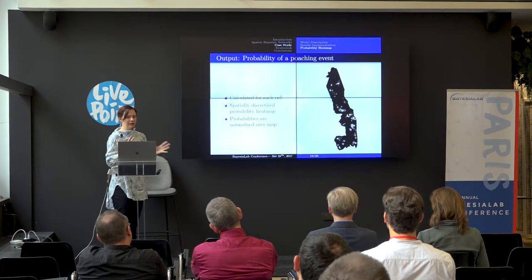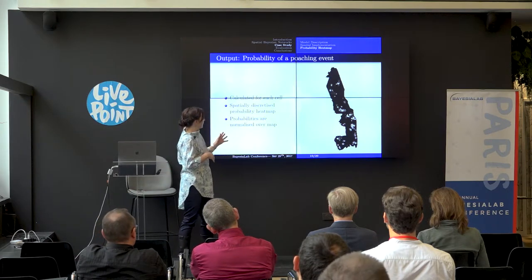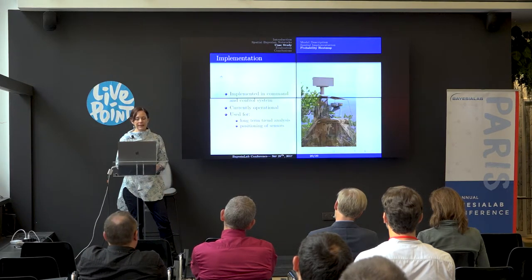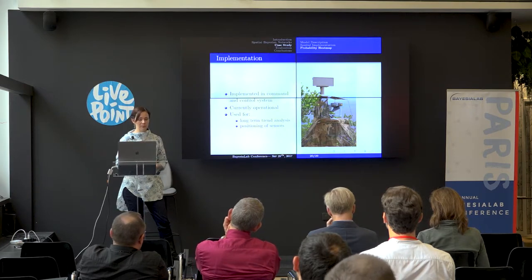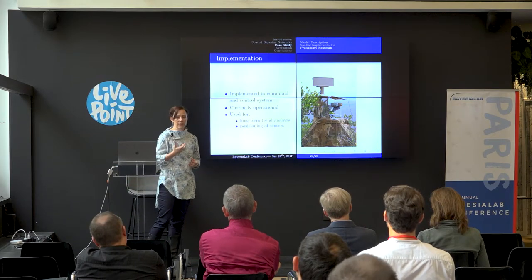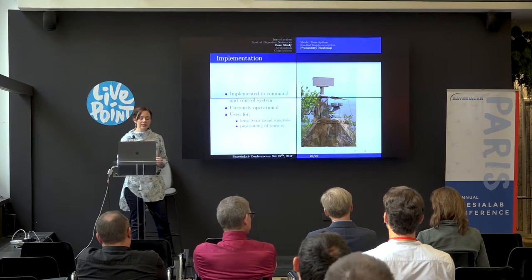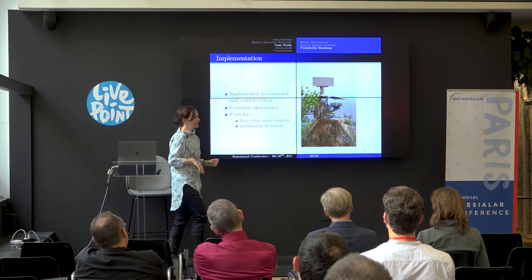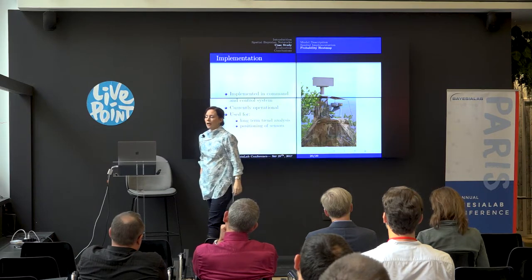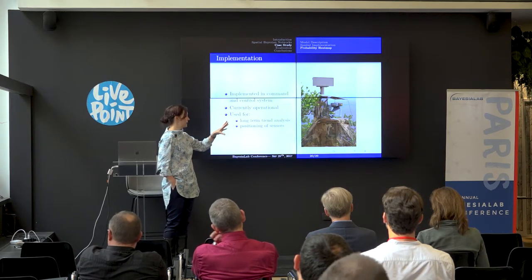Once we calculate the probabilities for each cell, we normalize the probabilities over the map. The implementation of the Bayesian network probability heat map is currently implemented in a command-and-control system that is operational in the Kruger National Park. They use it for long-term trend analysis and positioning of surveillance sensors — they only have a few of those sensors, so the probability heat map gives them an indication of where to place them.